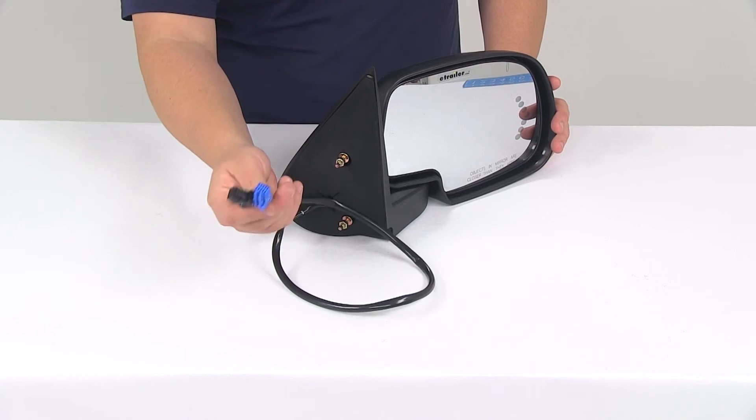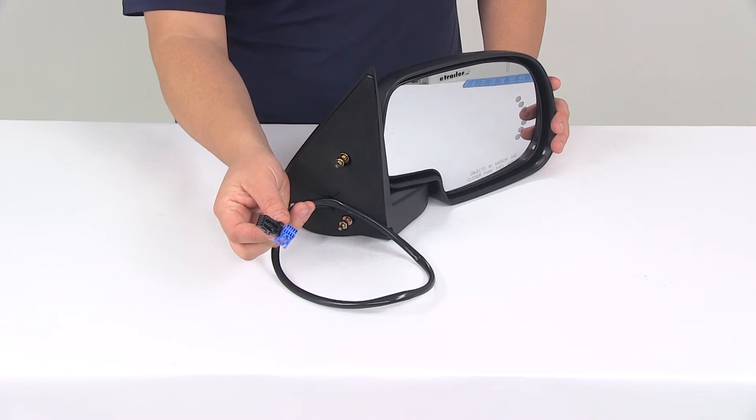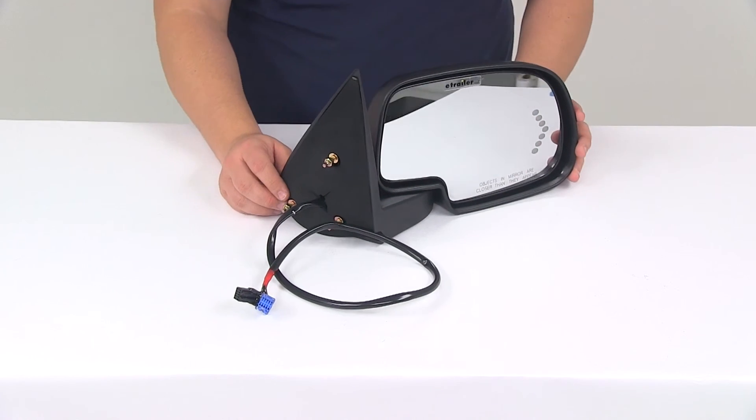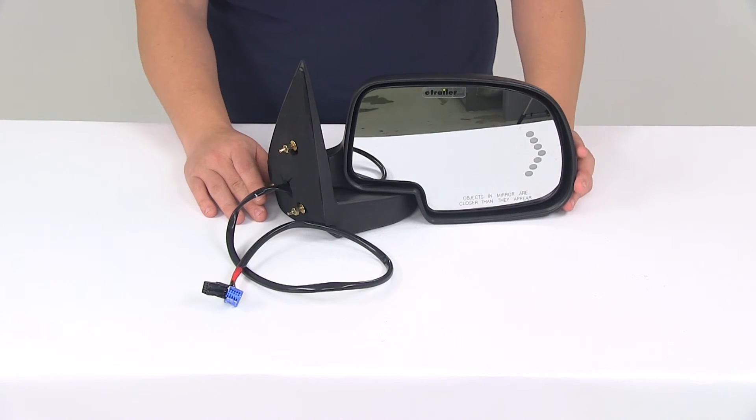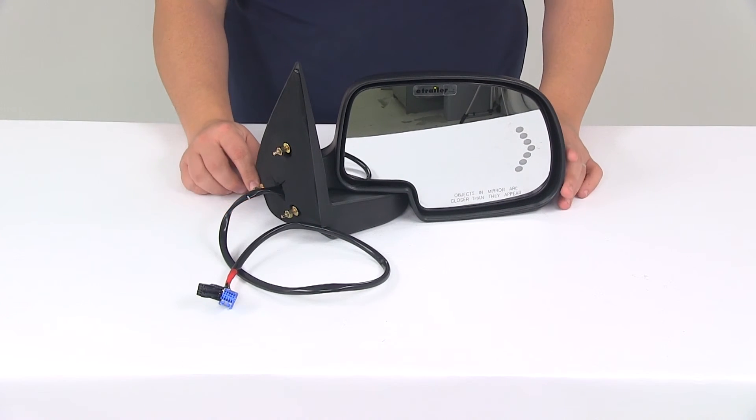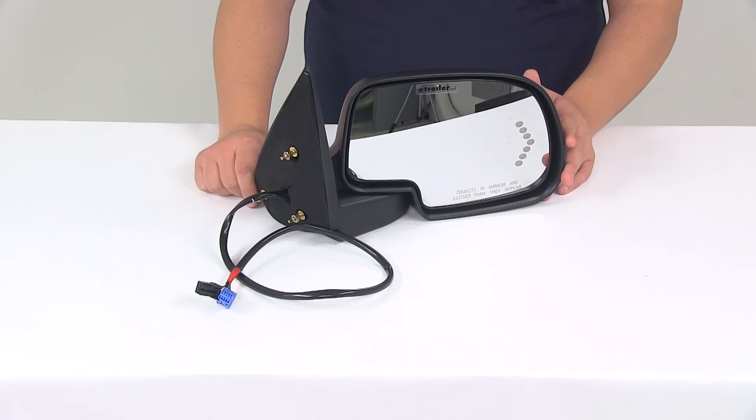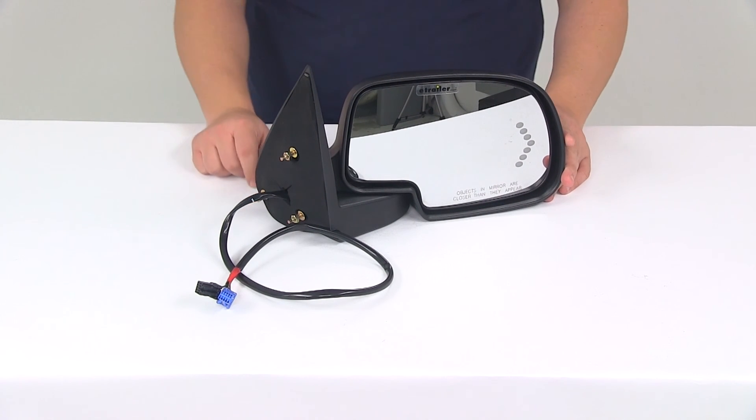Then you have the wiring. This plugs into the existing electrical wiring on the vehicle. With this part number you get one passenger side mirror. Please keep in mind that the power remote capability, heated glass, and LED turn signal of this mirror will work only if your vehicle is already equipped with those functions.